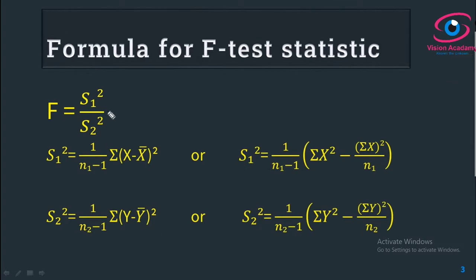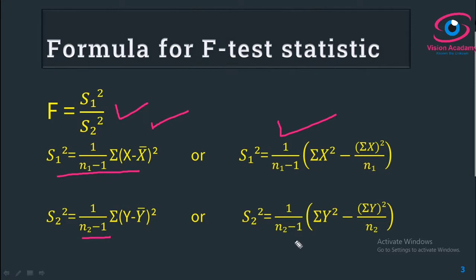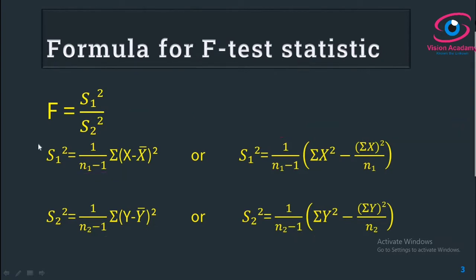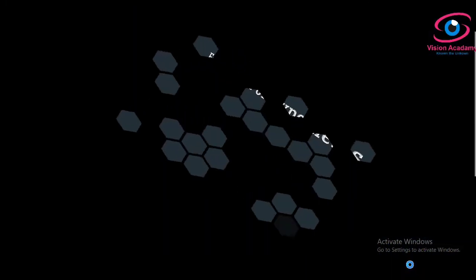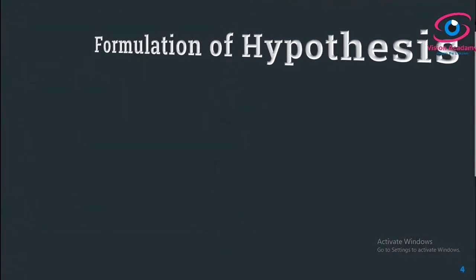To find the variance of A and B, the F-test formula is F equals S1 square divided by S2 square. To find S1 square, this is the formula — either form of the formula can be used. And for finding S2 square, this is the corresponding formula. Using these formulas, we first find S1 square and S2 square, and thereafter we can apply the F-test. Before that, let us formulate a hypothesis for the given problem.